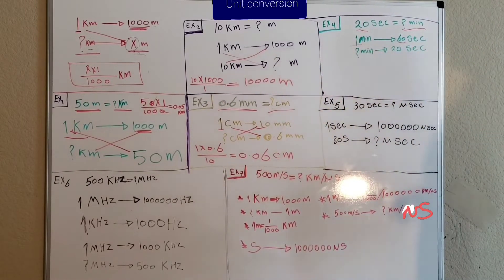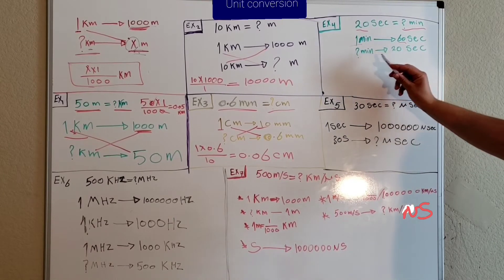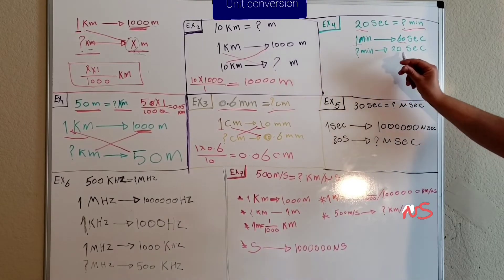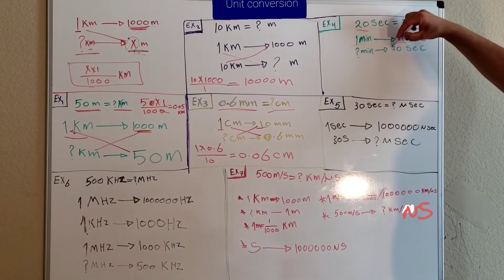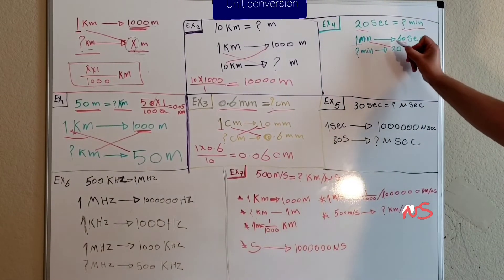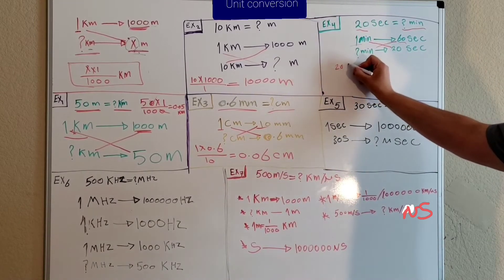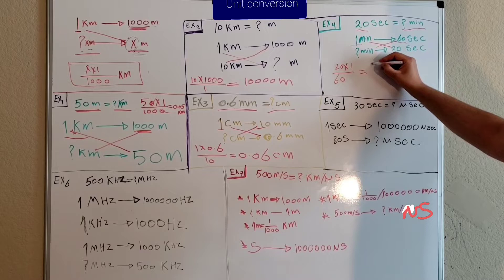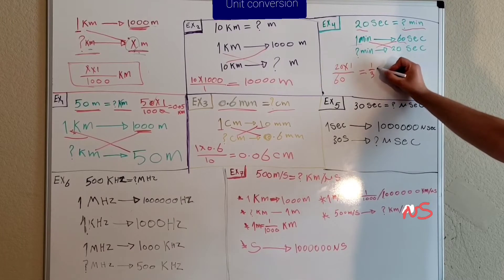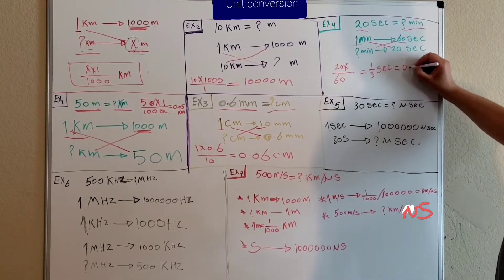Example number four: twenty seconds equals how many minutes? We know that one minute equals sixty seconds. We need to convert twenty seconds to minutes, so we multiply twenty by one and divide by sixty — that's twenty times one over sixty — which equals one third, or approximately 0.33 minutes.